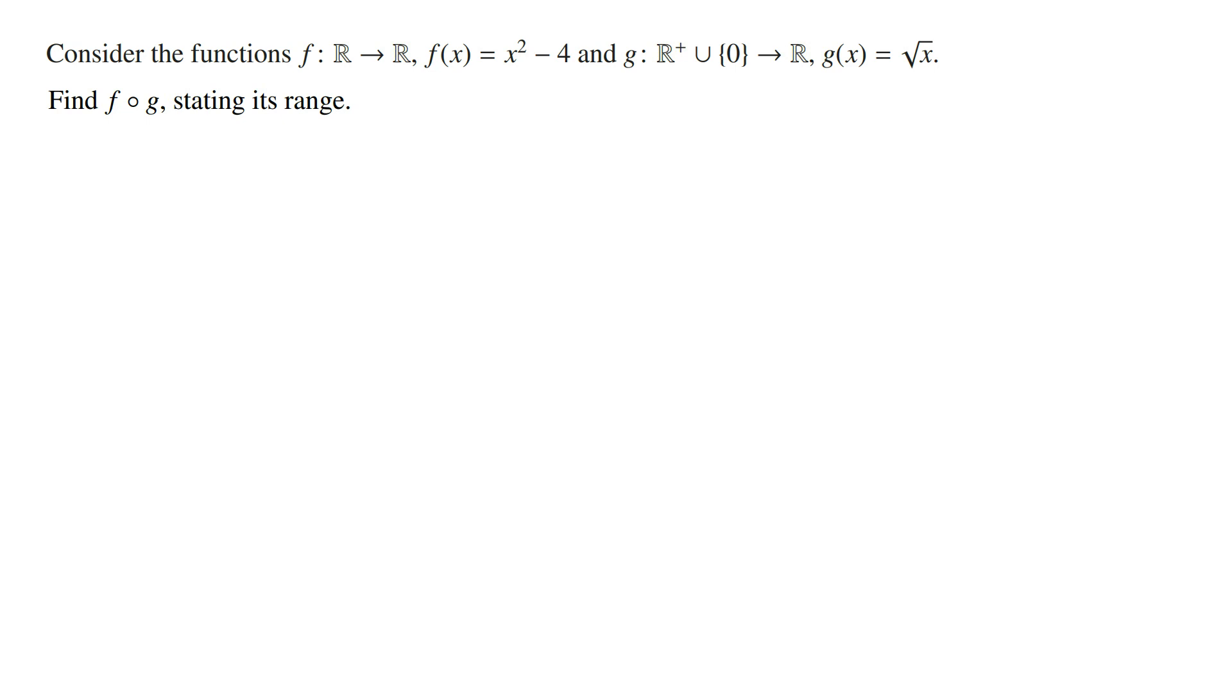f of x is equal to x squared minus 4 and g of x is equal to the square root of x. And so f of g of x is going to be f of the square root of x.